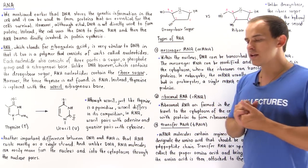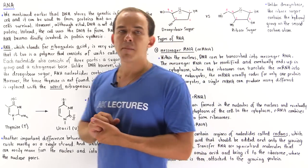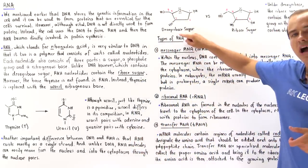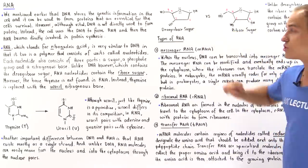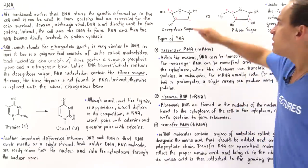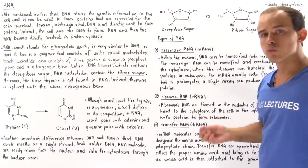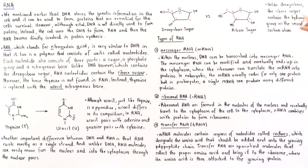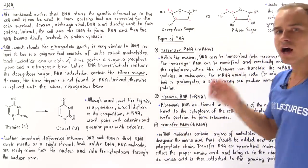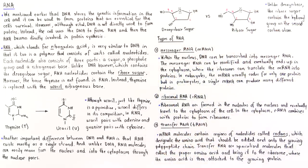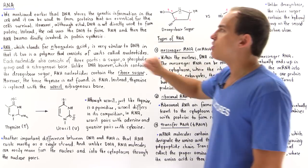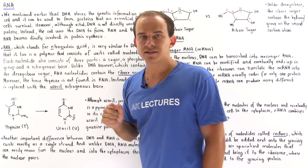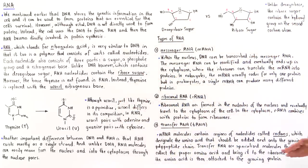Let's differentiate the type of sugar that exists in DNA and RNA molecules. In DNA, the sugar involved is the deoxyribose sugar. Notice that on the deoxyribose sugar, the second carbon does not have a hydroxyl group. However, RNA molecules contain the ribose sugar, and unlike deoxyribose, the ribose sugar does contain a hydroxyl group on the second carbon. That's exactly why RNA stands for ribonucleic acid while DNA stands for deoxyribose nucleic acid.